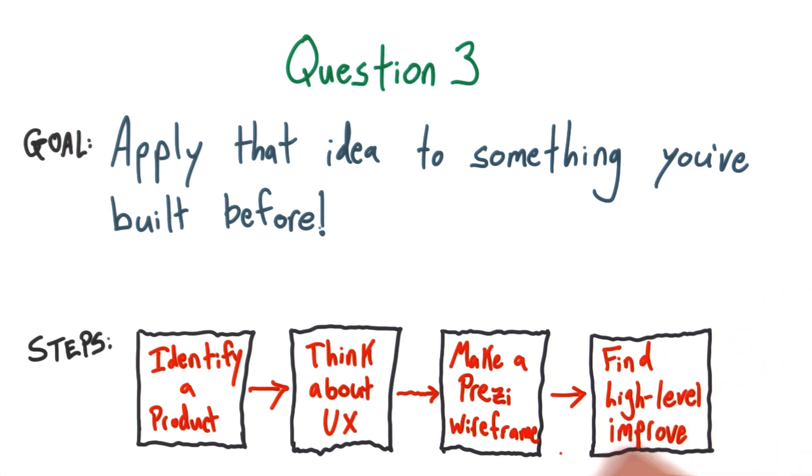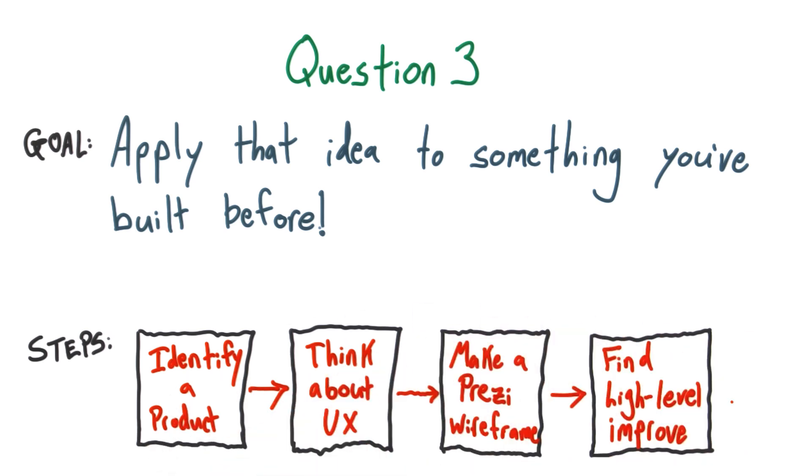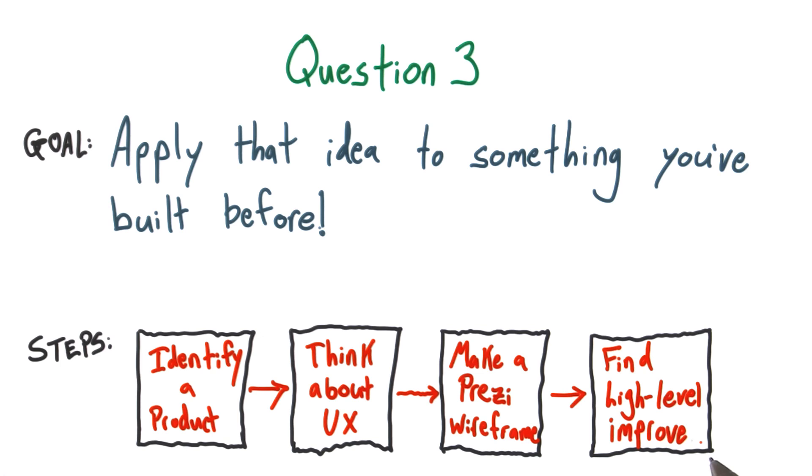This can mean rearranging the steps, adding a step, removing a step. But hopefully by forcing yourself to write down the flow of the product at a high level, kind of like this, you'll spot any opportunities for big picture improvements. Good luck.